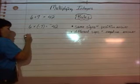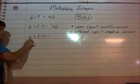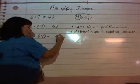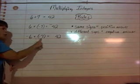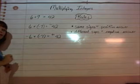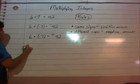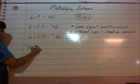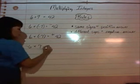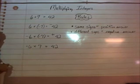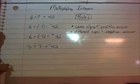Let's try another one. What if you have negative 6 times negative 7? You're still going to multiply 6 times 7 and get 42, but this time your signs are the same, so you will end up with a positive 42. One more: what if you have negative 6 times a positive 7? 6 times 7 is still 42, but because your signs are different, you will get a negative answer. And it's that simple.